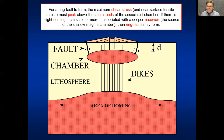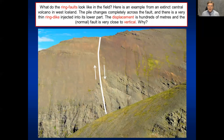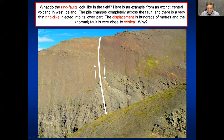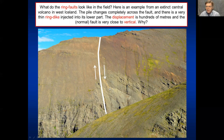What do ring faults look like in the field? Here in west Iceland we see an old central volcano with a ring fault showing a displacement of a couple of hundred meters. The ring fault is very close to vertical — very steeply dipping — but slightly inward dipping, making it a normal ring fault rather than a reverse one.